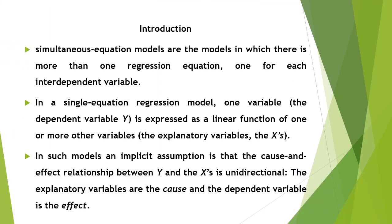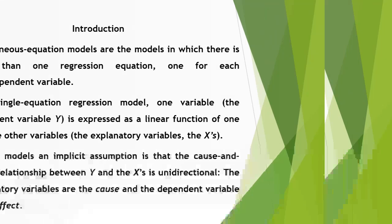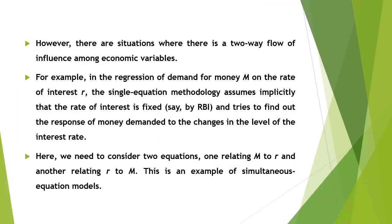Let us recall the structure of a single equation regression model, where the dependent variable Y is expressed as a linear function of one or more explanatory variables — the X variables. In such models, we usually make an implicit assumption that the cause-and-effect relationship between Y and the explanatory variable X is unidirectional: the explanatory variables are the cause and the dependent variable is the effect.